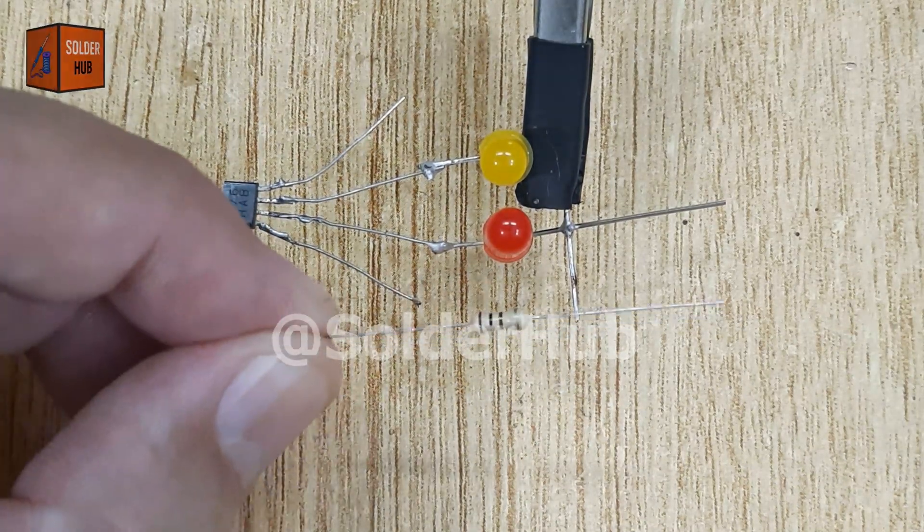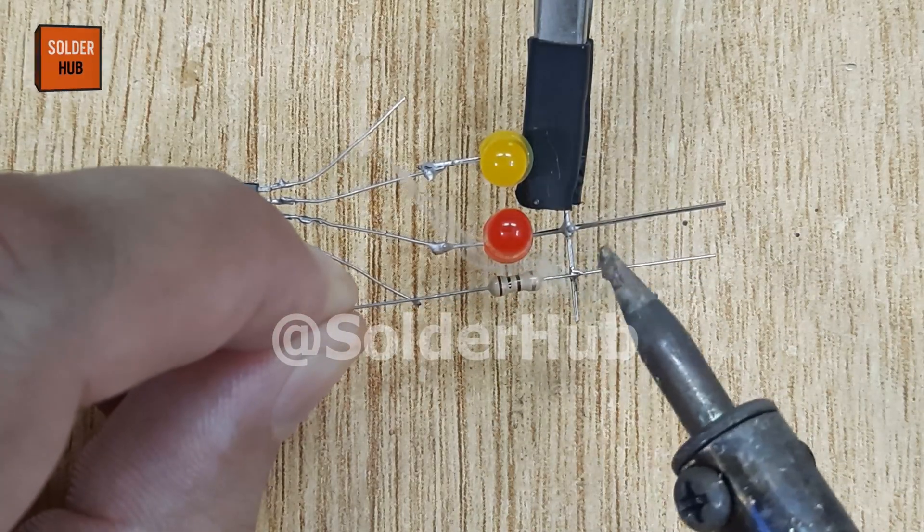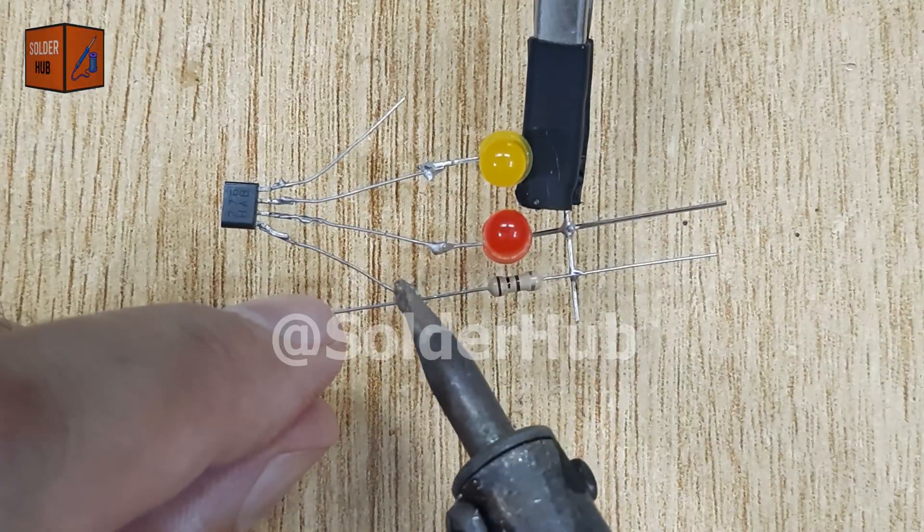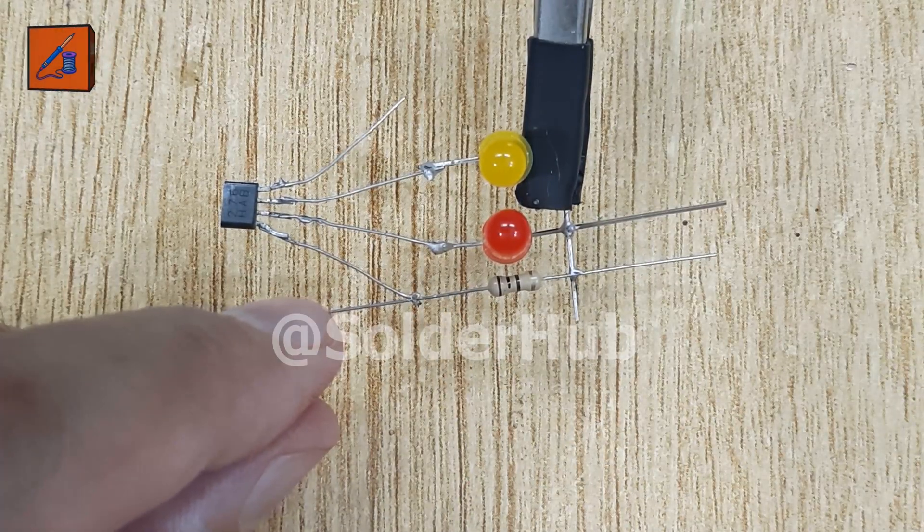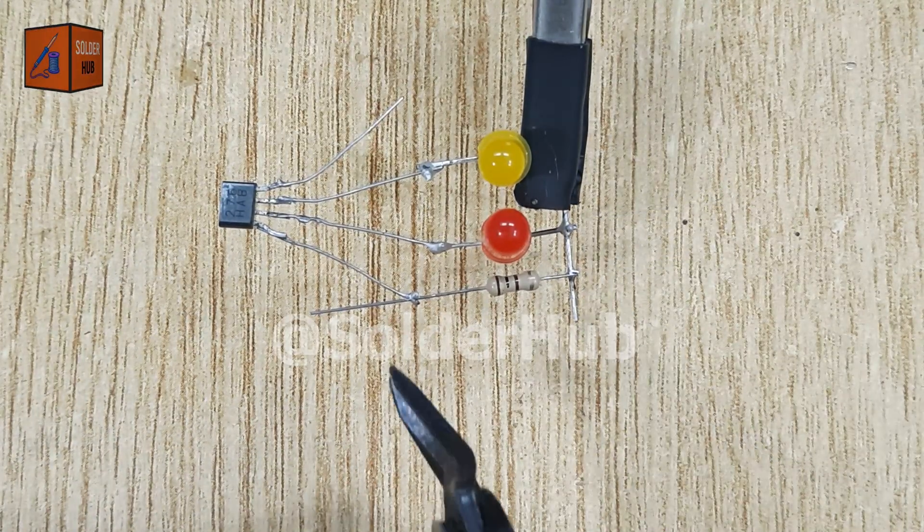To protect the LEDs from excess current I take a 100 ohm resistor. I solder this resistor between the negative pins of the LEDs and the first pin, VCC, of the hall effect sensor. The resistor limits current making sure the LEDs glow safely without burning out. Once everything is fixed I trim off the extra pins to make the circuit neat and compact.